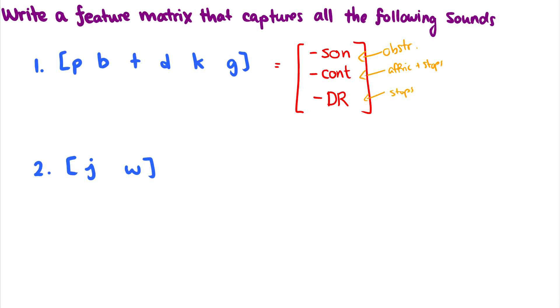So the question is, this captures p, b, t, d, k, g. This is the class of stops, the natural class of stops. Could I do better? In other words, I have three features here. Do I need three features?